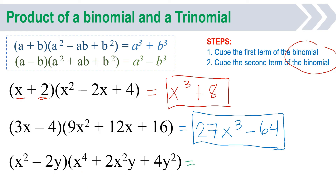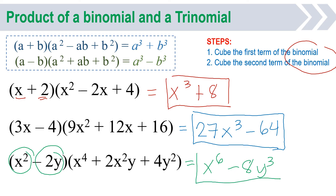To get the answer, just cube the first term, x squared: x squared times x squared times x squared gives x raised to 6. For the second term, negative 2y: negative 2 times negative 2 is 4, times negative 2 is negative 8, and y times y times y is y cubed. So the final answer is x raised to 6 minus 8y cubed.